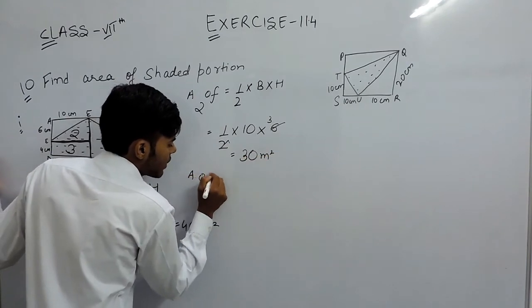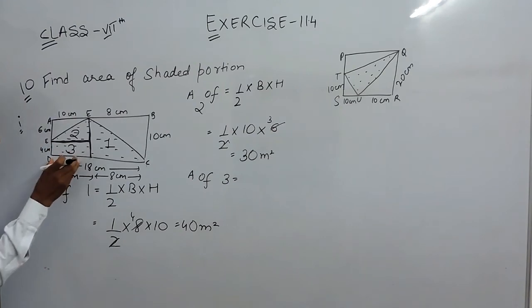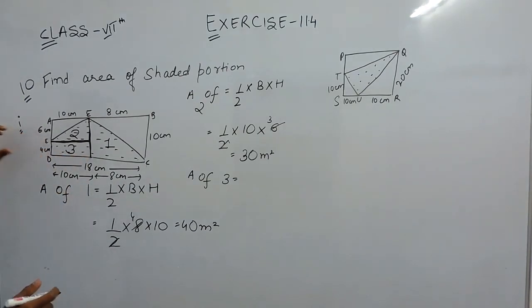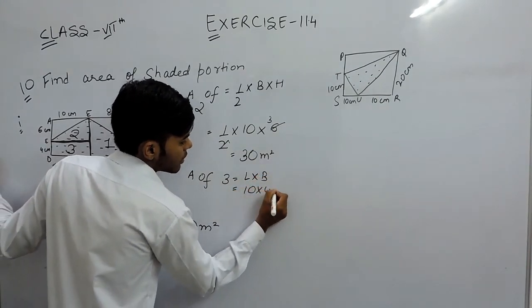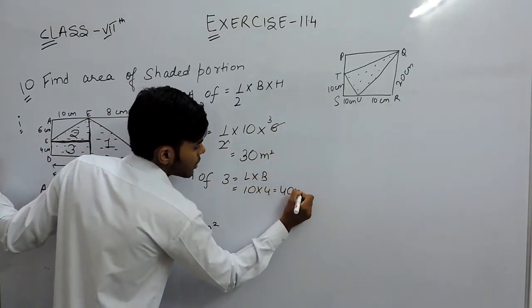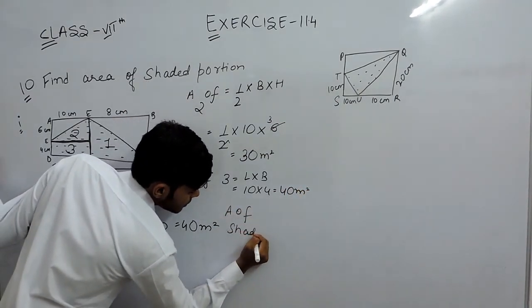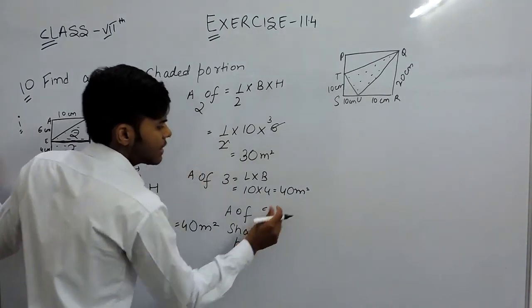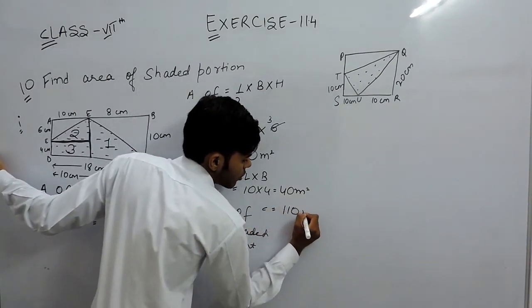And the area of figure 3 — this is a rectangle. The length is 10 centimeters and the breadth is 4 centimeters. So length into breadth, that is 10 into 4, equals 40 square centimeters. So the area of the shaded part will be equal to 40 plus 30 plus 40, that will be equal to 110 square centimeters.